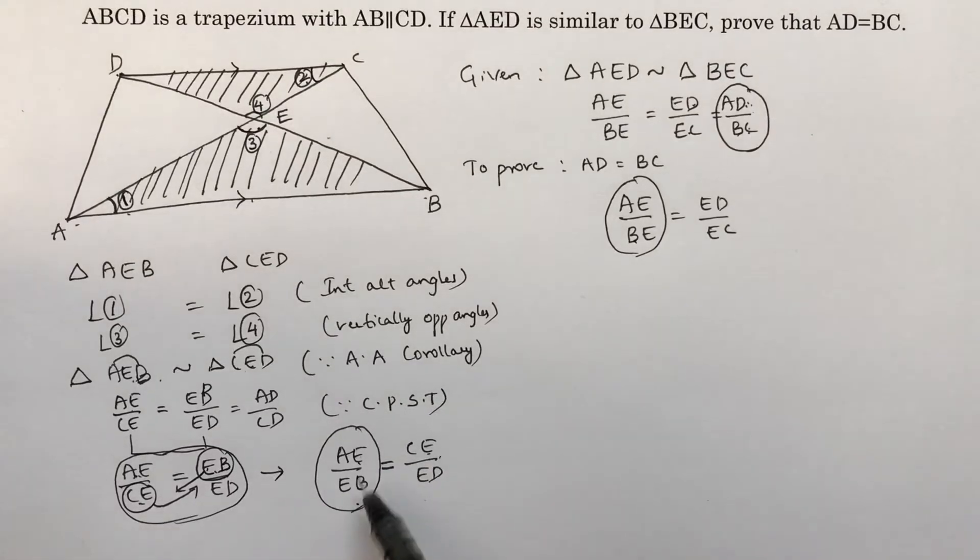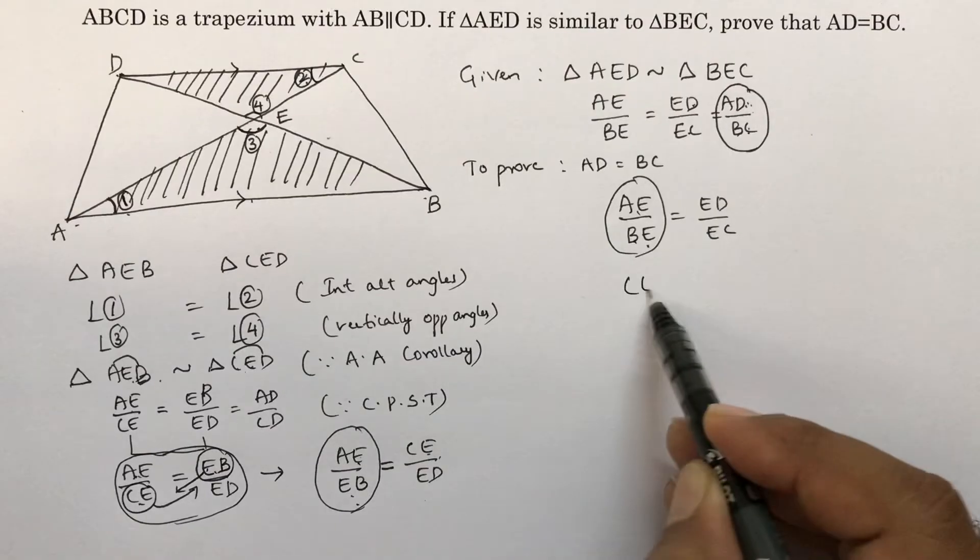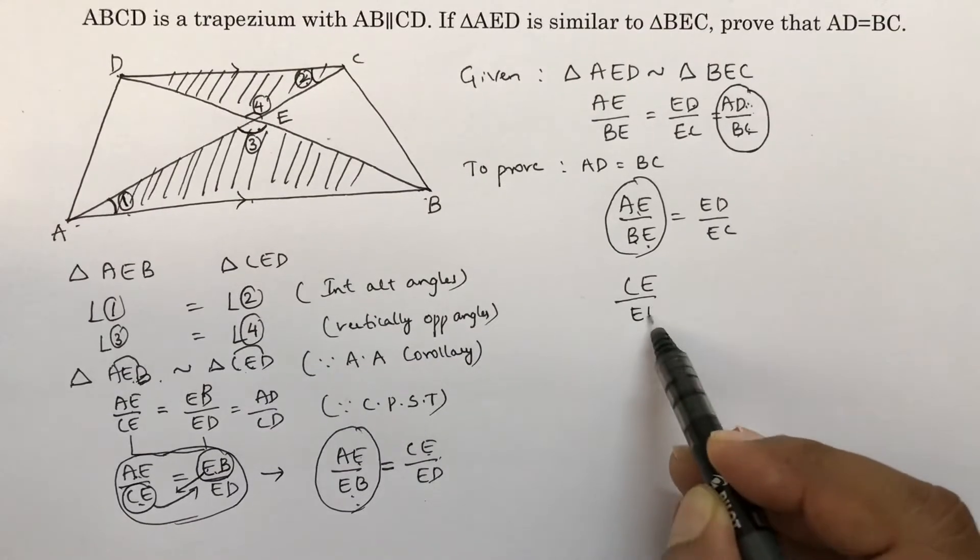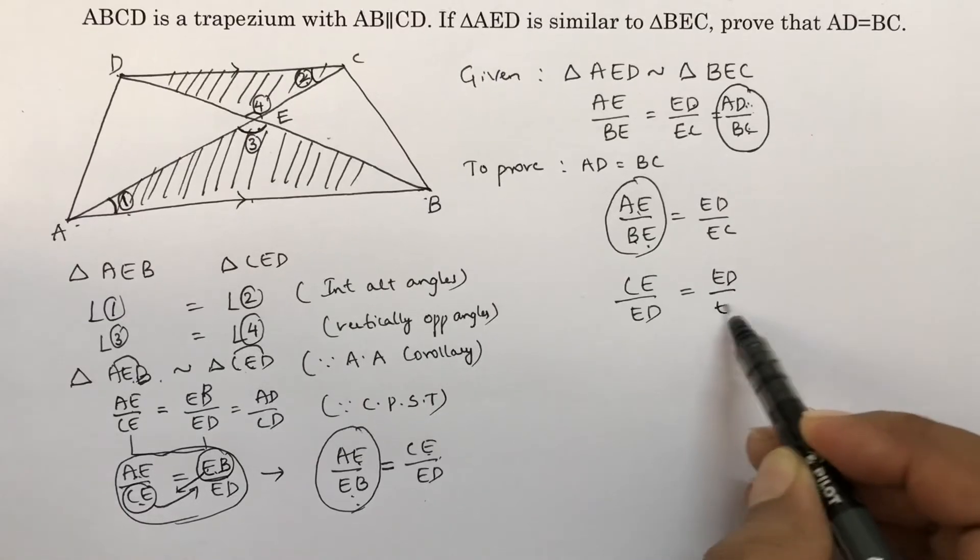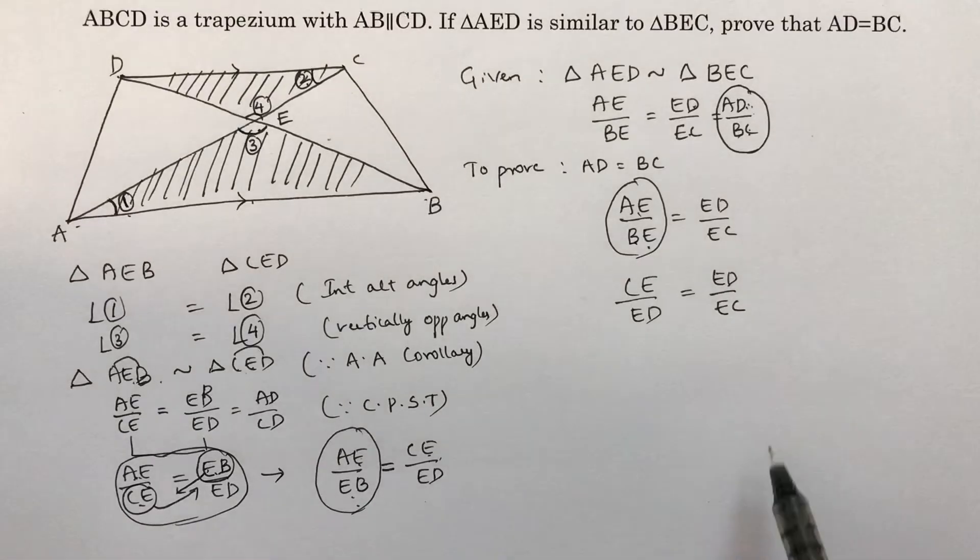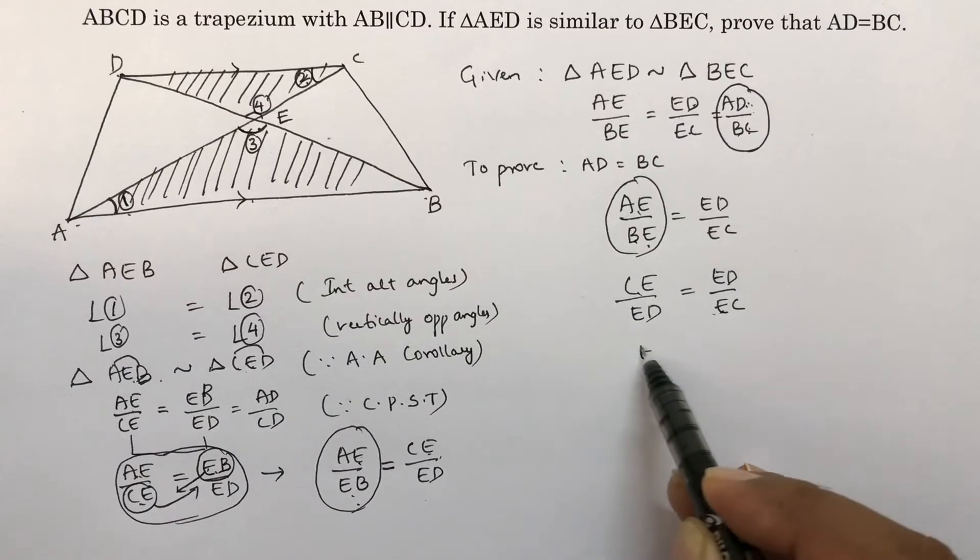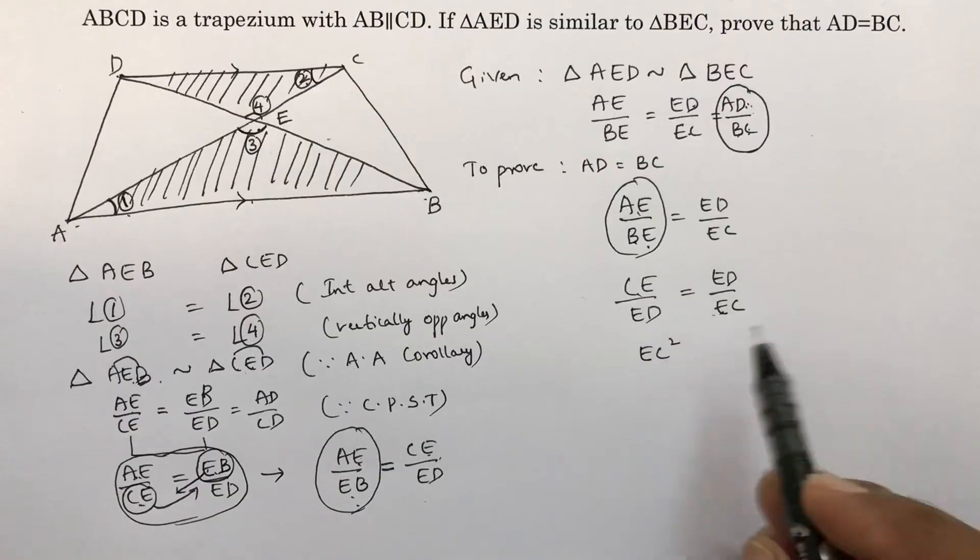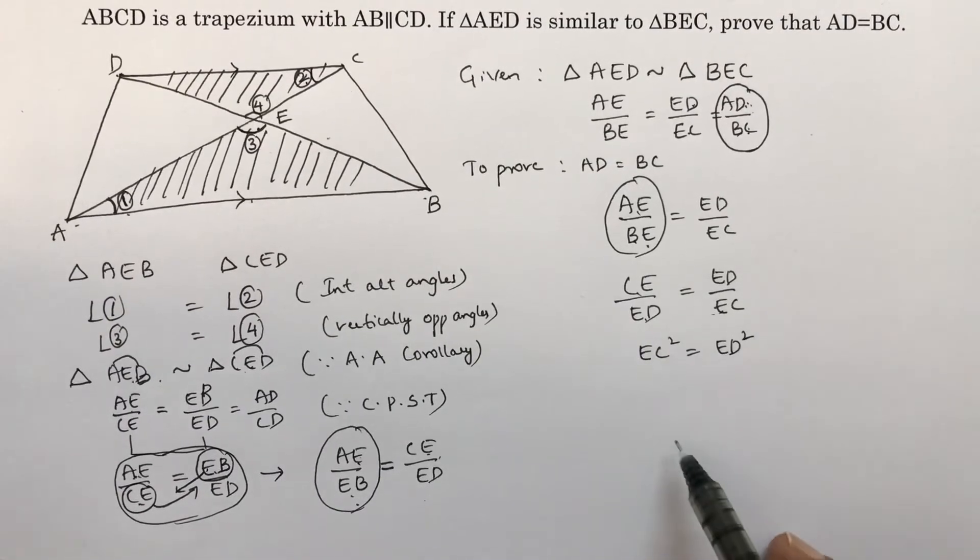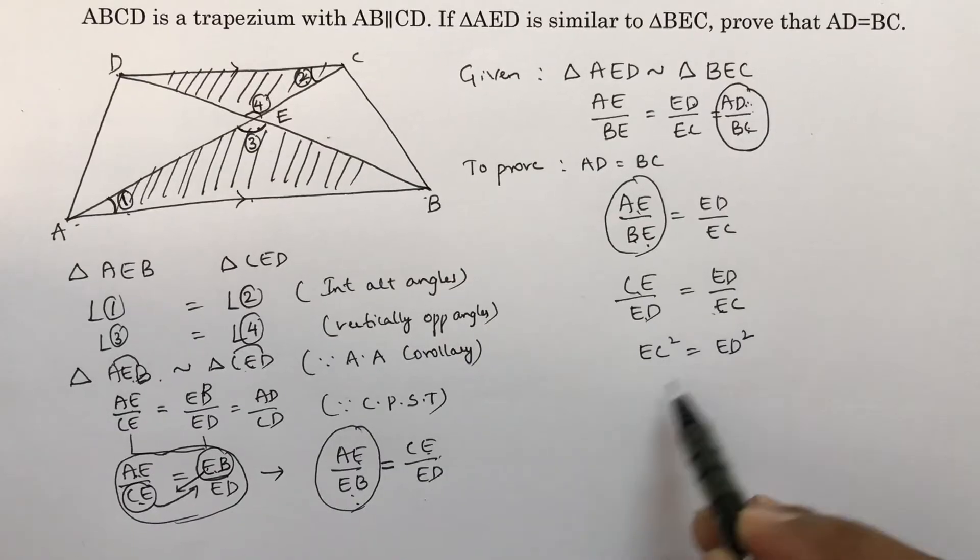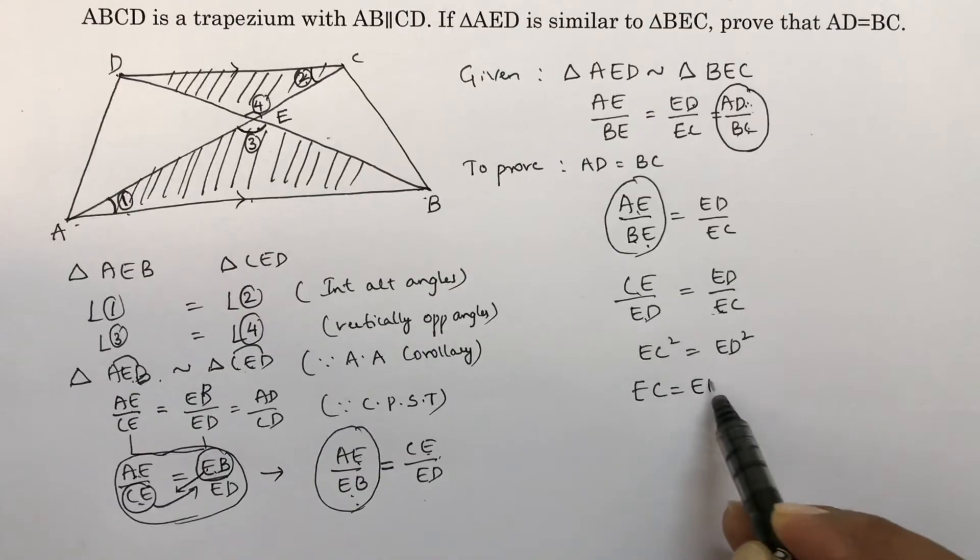In place of this you can write CE by ED equals ED by EC. Now if you will cross multiply, EC into EC, you will get EC square. Here ED into ED is ED square. So if you will apply square root, you will get EC equals ED.